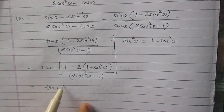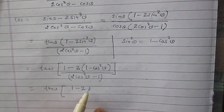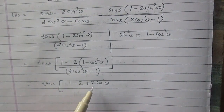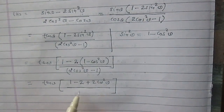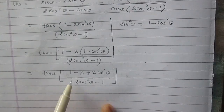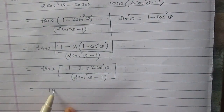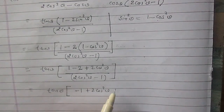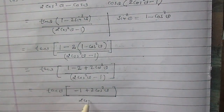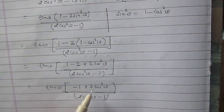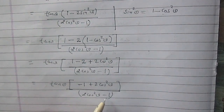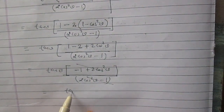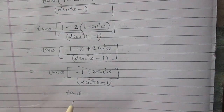On simplifying the numerator, we get 1 minus 2 plus 2 cos square theta, because minus 2 multiplied by minus cos square theta gives plus 2 cos square theta. So the numerator finally becomes minus 1 plus 2 cos square theta, and the denominator is 2 cos square theta minus 1. We see that minus 1 plus 2 cos square theta is the same as 2 cos square theta minus 1, so these two terms cancel. The remaining term is tan theta only, which equals the right hand side.